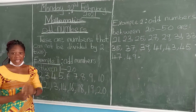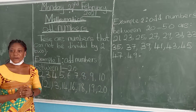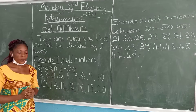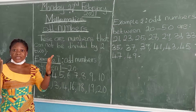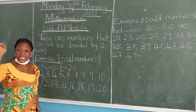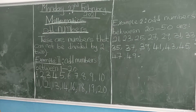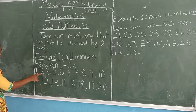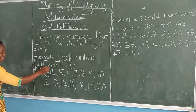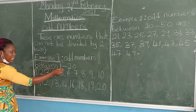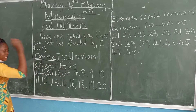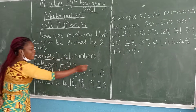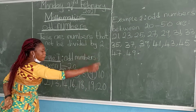Method number one is the skipping method. We start with the first odd number, which is one. We skip two, we skip three, we skip four, we skip five, we skip six, we skip seven, we skip eight, we skip nine, and we skip ten.